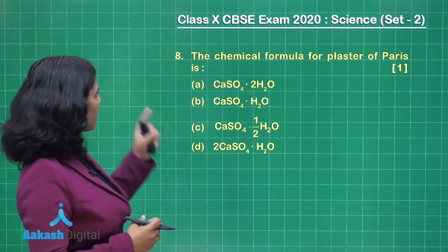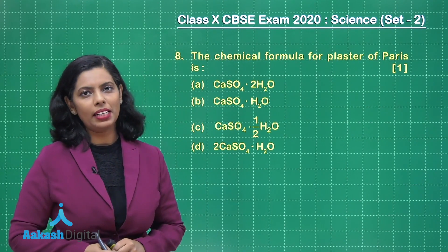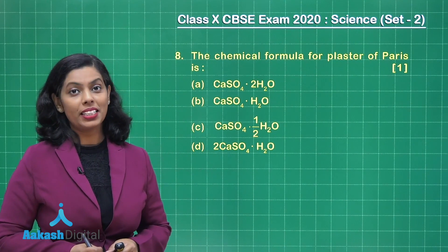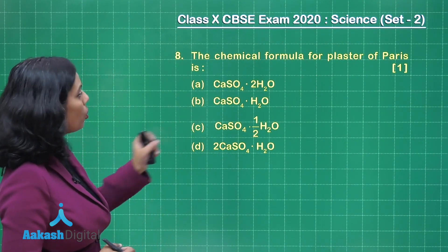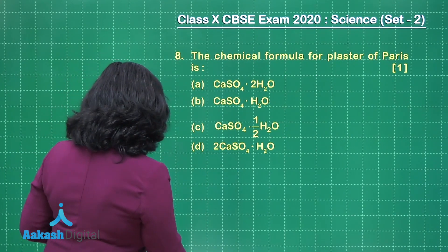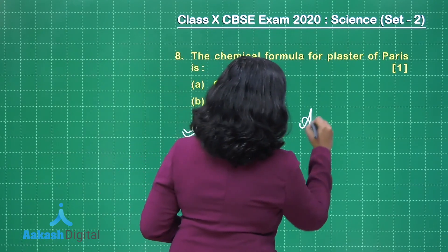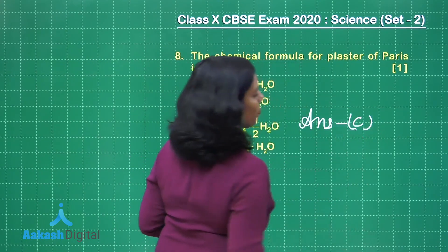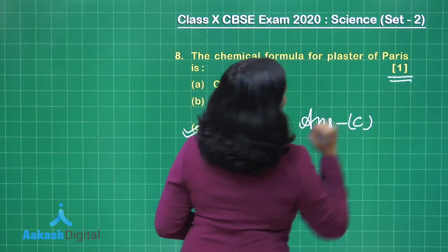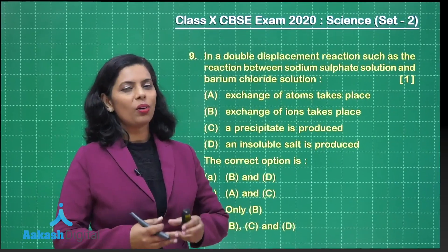Let's move on to the next question. Now here is question number 8 from the chemistry section. The chemical formula of Plaster of Paris — a very well known substance in which water of crystallization is present. If you look at the given options, you can easily choose the correct answer, which is given in option C. If you have chosen this option, then definitely you are going to get one mark.